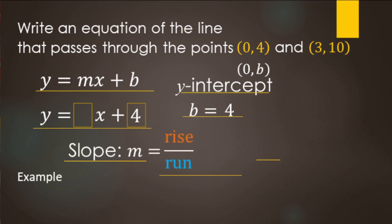Next we need to calculate slope — rise over run. For the rise, we look at the y values: we're going from four to ten, counting up six numbers, so the rise is six. For the run, we look at the x values: from zero to three — it went over three. So the slope is six-thirds.